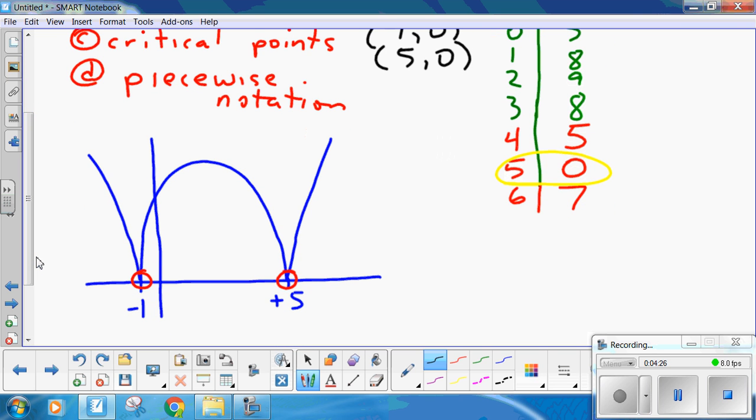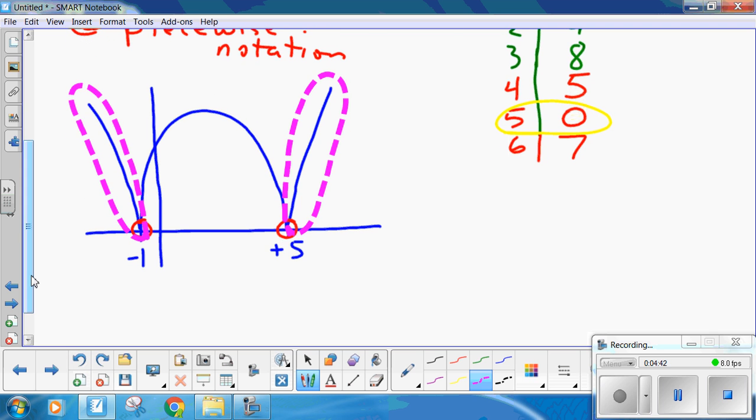piecewise notation is a pain in the bum. You have to look at this graph for a moment and realize everything below minus 1 and above plus 5 is your standard parabola. Because it should continue and go like this, but it doesn't because of that absolute value function. Anyway, so for, let me see, x is less than minus 1 and x is greater than 5, we have the standard function. It is x squared minus 4x minus 5. Now,